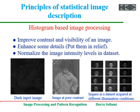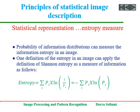Histograms can be exploited in image processing. They can be used for improving contrast and visibility of an image, for enhancing some details, or for normalizing the image intensity levels in a dataset. From the normalized histogram, which is a probability distribution of the grey levels, we can apply Shannon entropy as a measure of information entropy, where pi is the probability of having some grey level, and the logarithm of 1 over pi is the measure of entropy caused by pi.